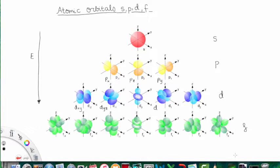So now we move on to talk about atomic orbitals, S, P, D, and F. So previously we mentioned the Schrödinger wave function and an atomic orbital is a mathematical function that describes the wave-like behavior of either one electron or a pair of electrons in an atom.